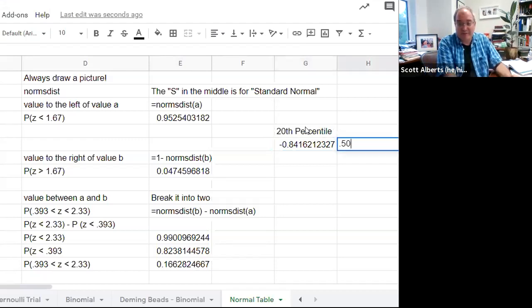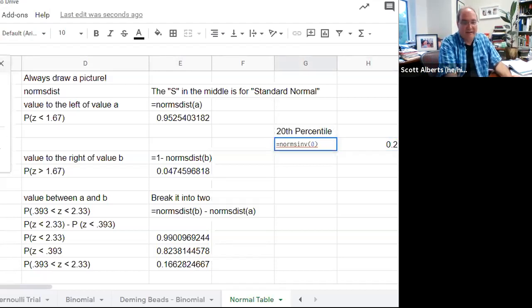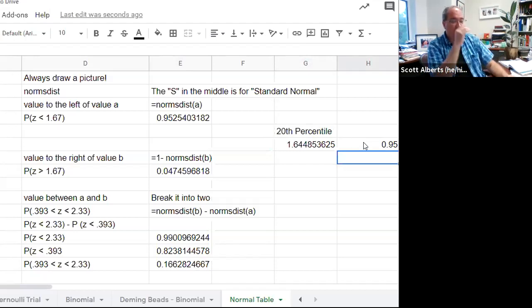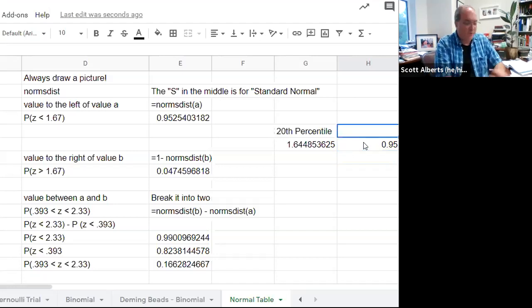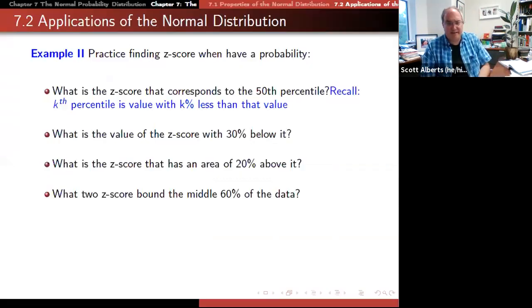We could be even snazzier and we could put the value over here for the 20th percentile and then just put this into the command like that. Instead of doing it, we just put this value here and we get that same number. But now we can just play with it. If I say, what's the median? You'd say that's at zero. The 80th percentile is going to be the plus version of that. With this norms.inv command, we can do the same thing, but in the backwards direction.